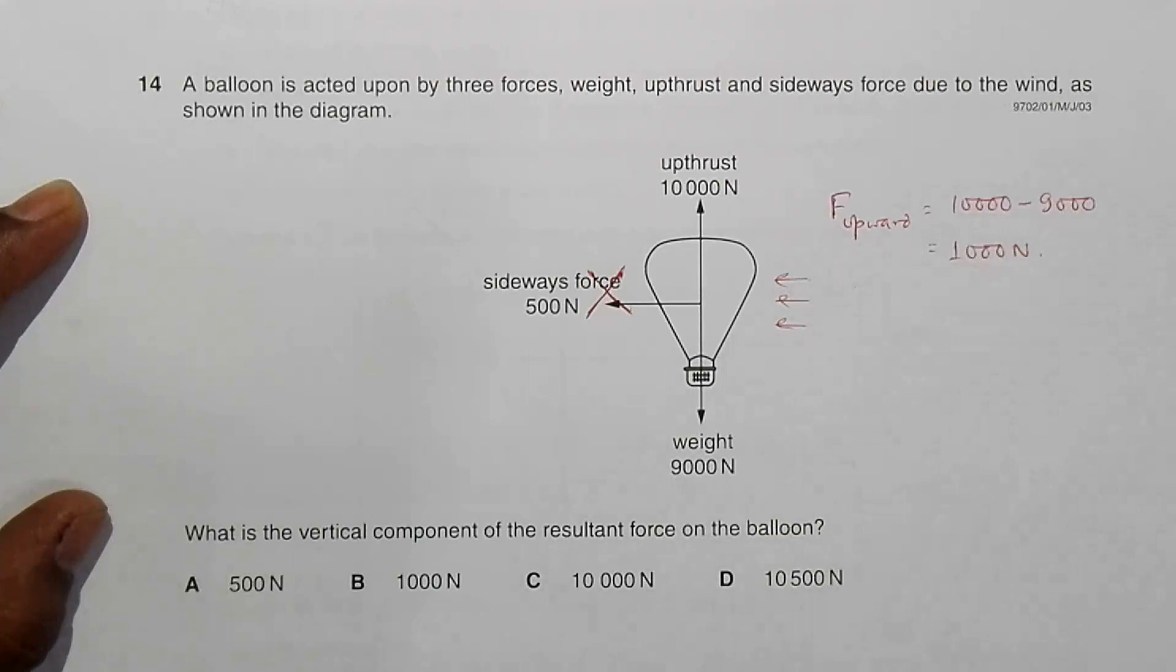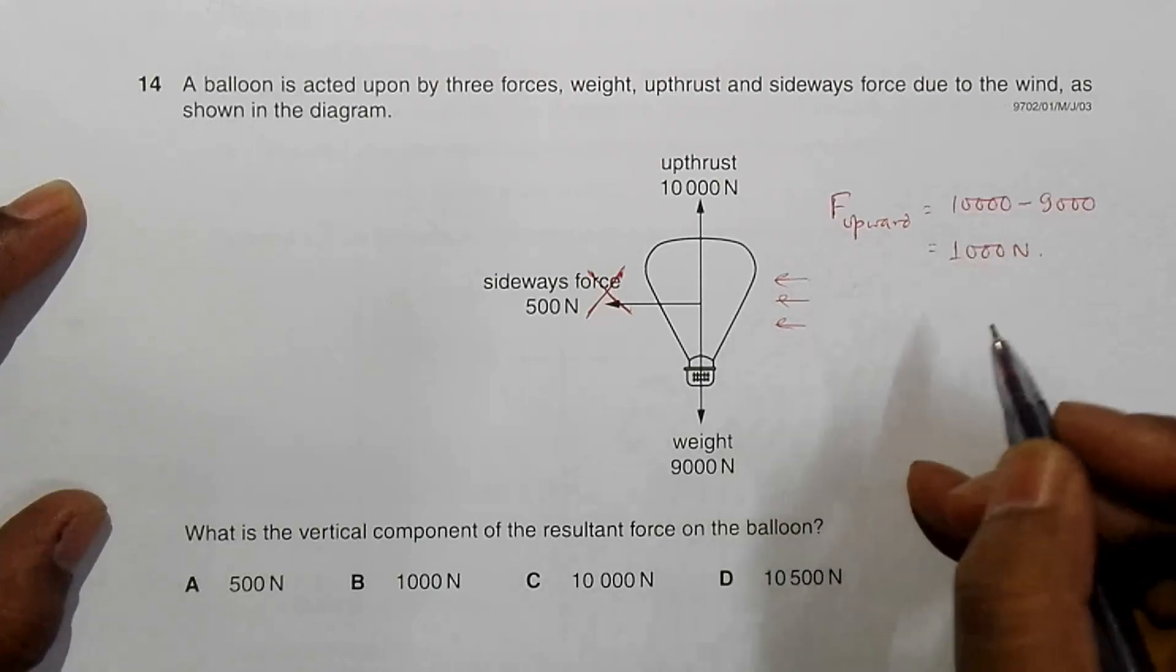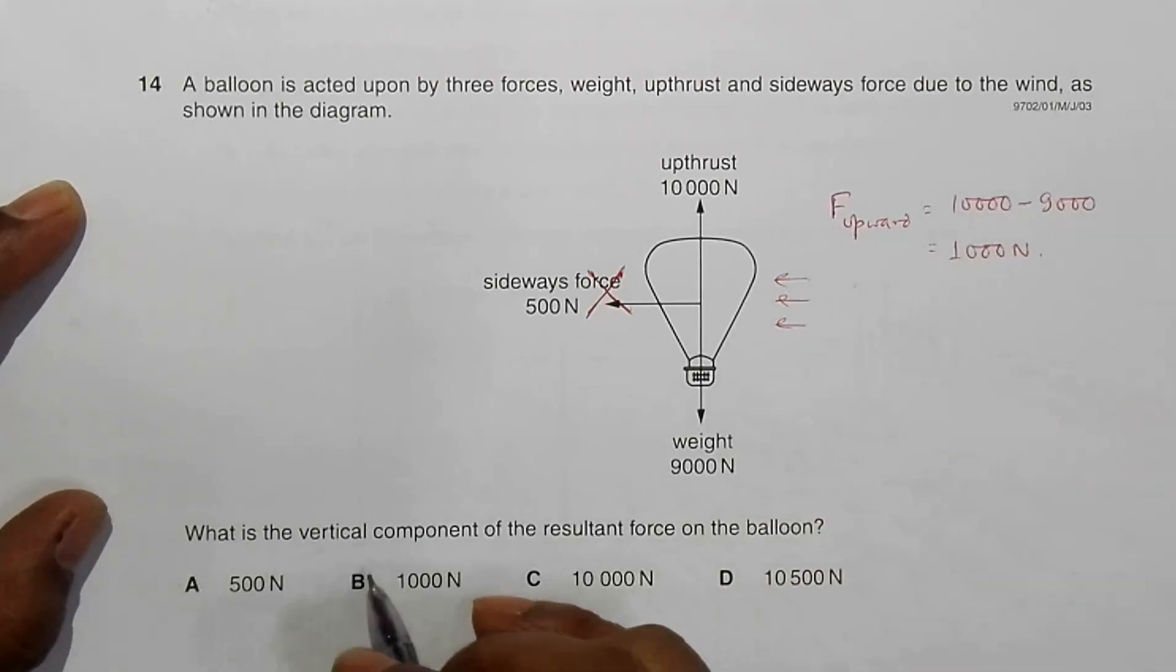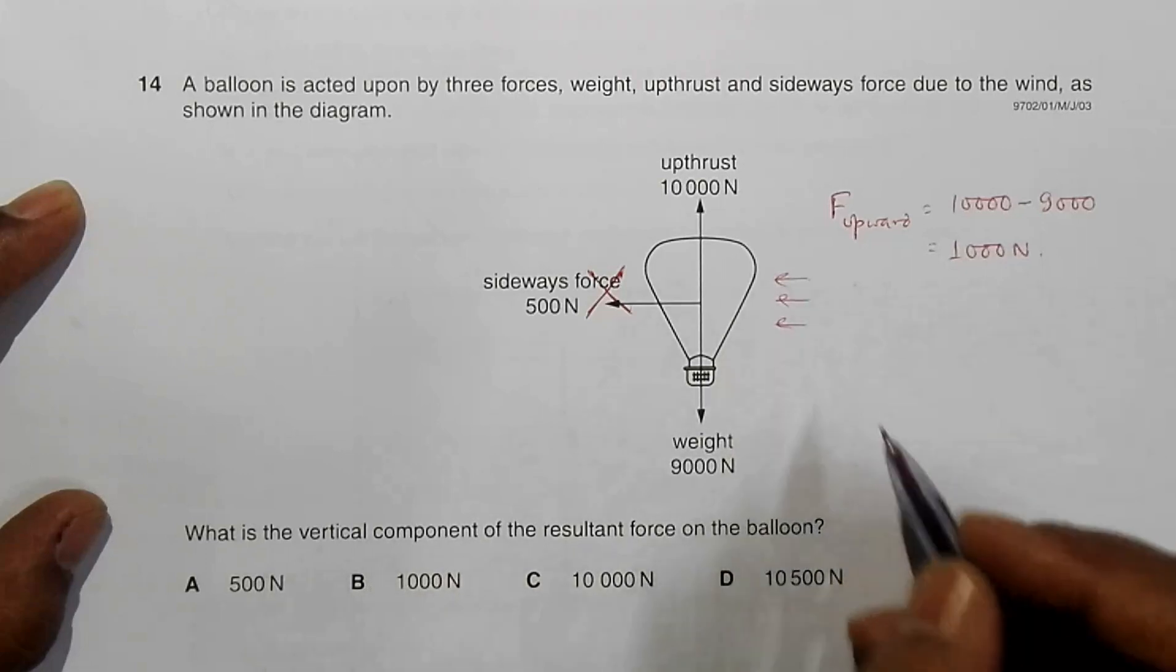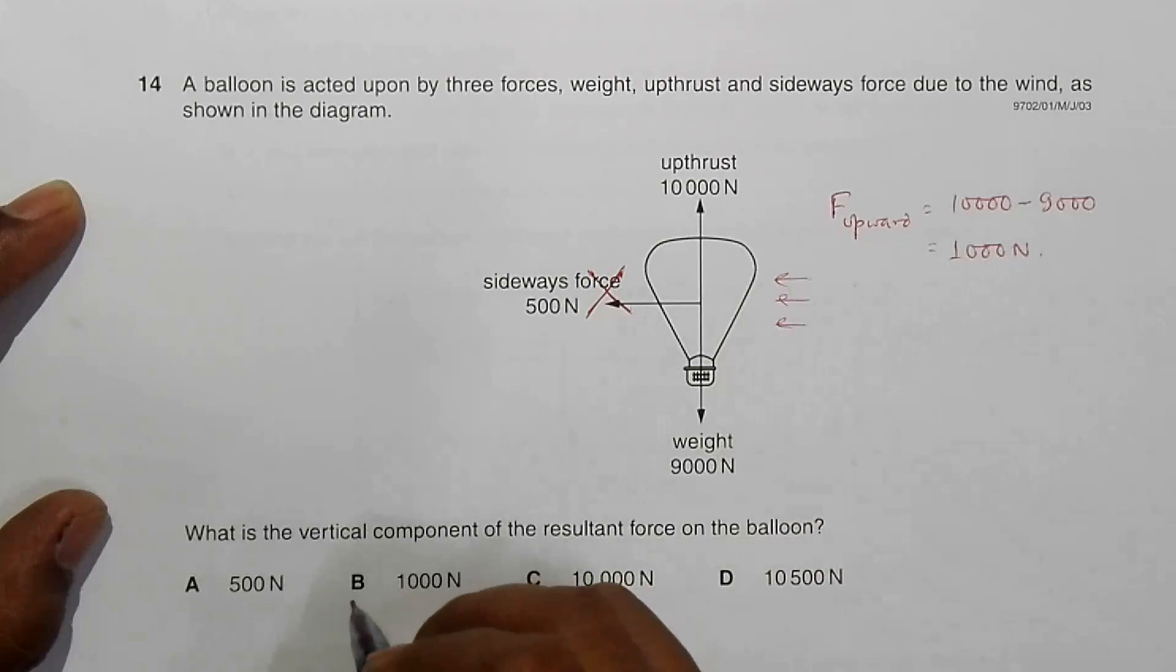This is the vertical component of the resultant force on this balloon. The correct choice is choice number B.